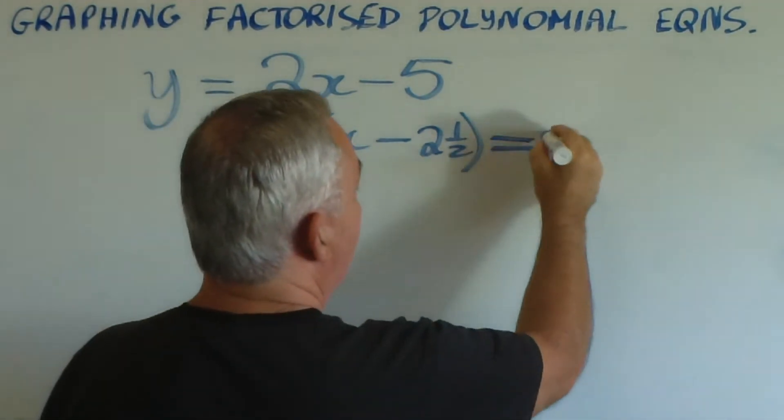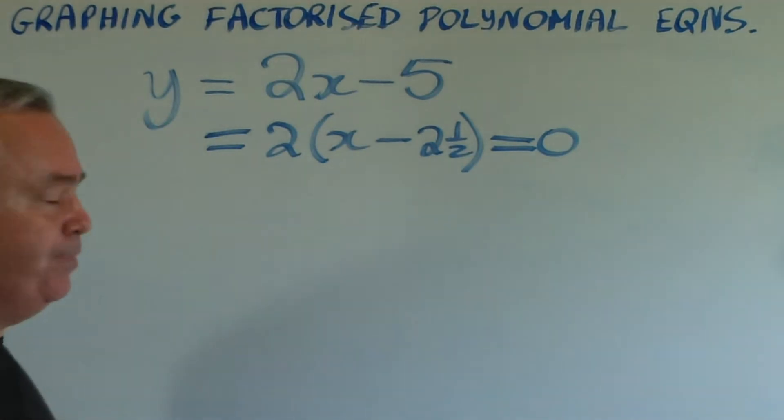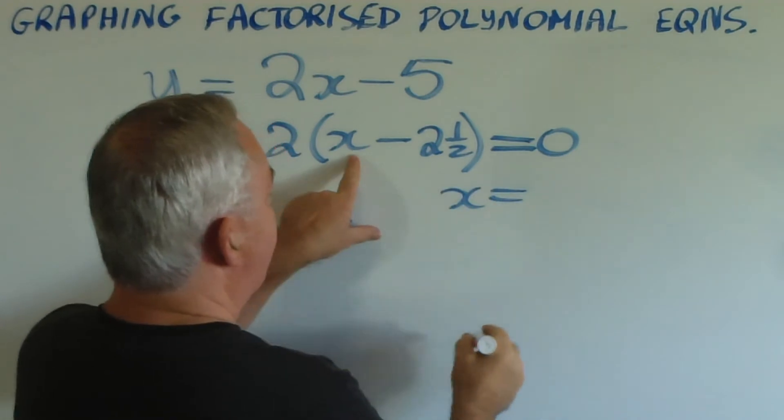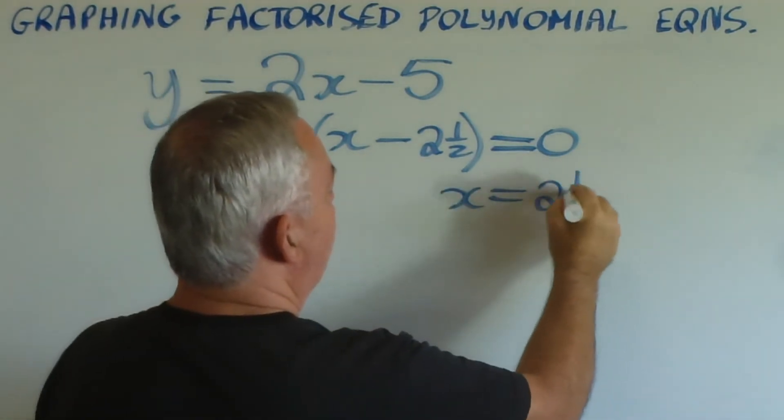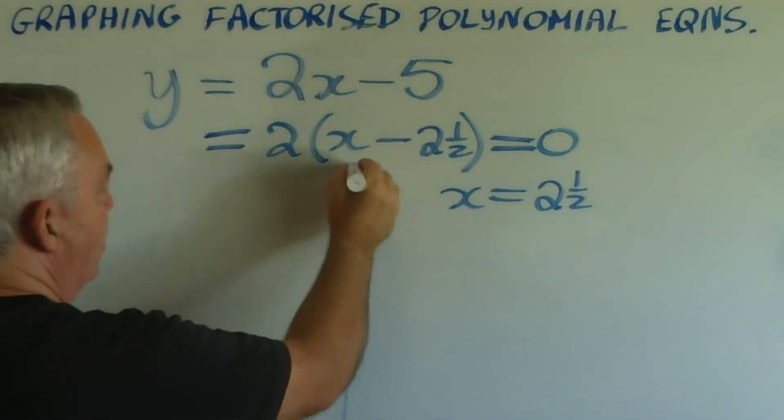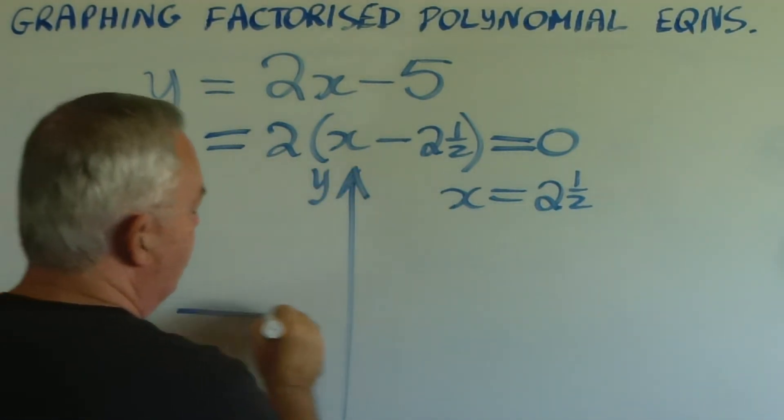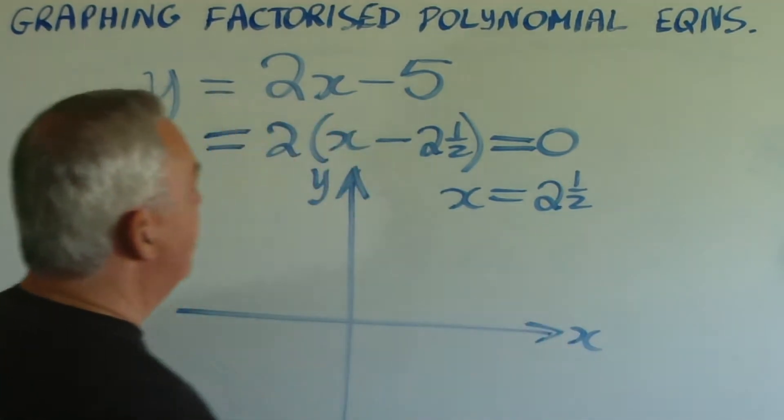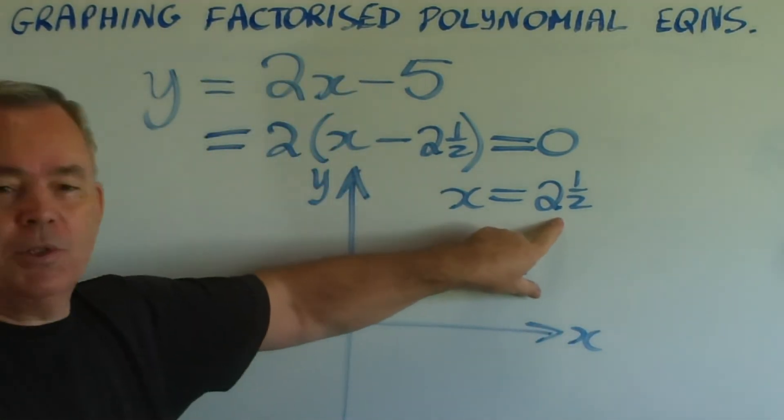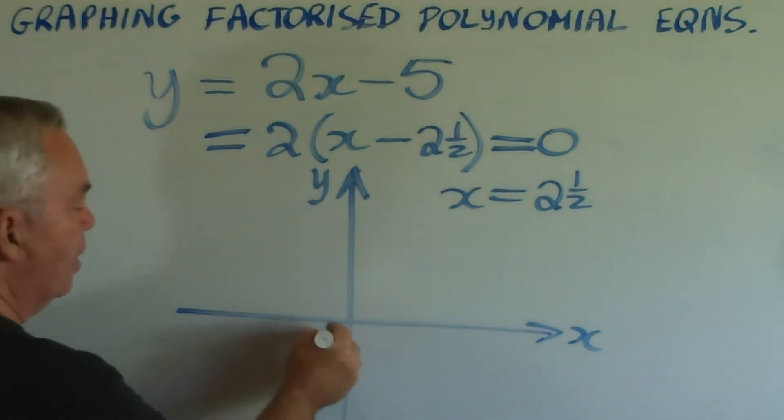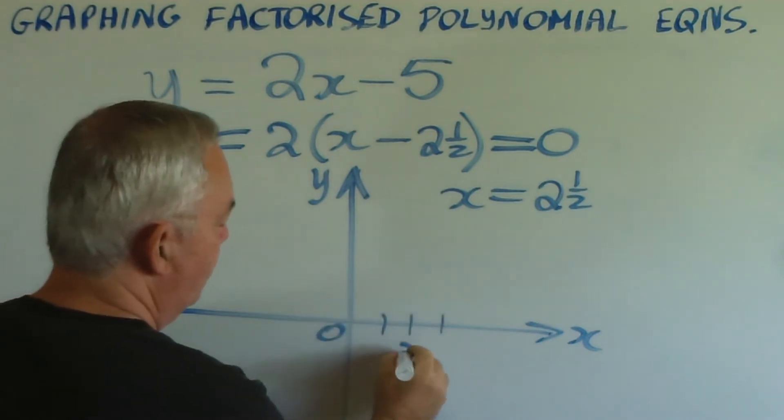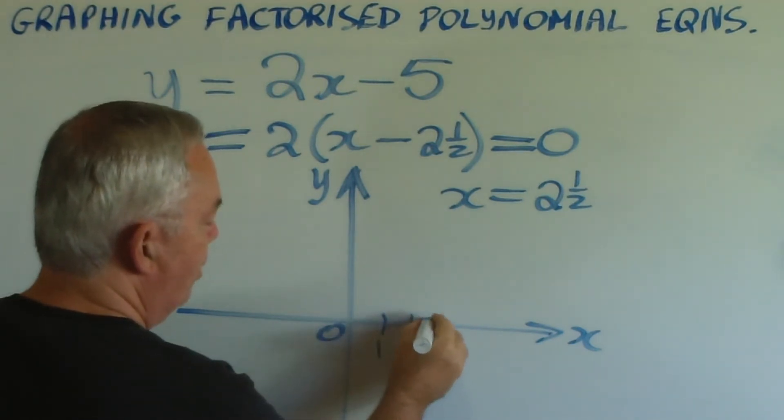Again, to find the root of this polynomial, we set y equal to zero, and we find there's a root when x is worth two and a half. So as you can see, another consequence of having more complicated factors is sometimes the roots are not whole numbers. So we plot this root at two and a half.